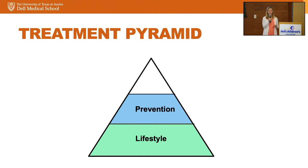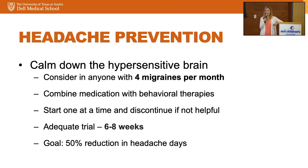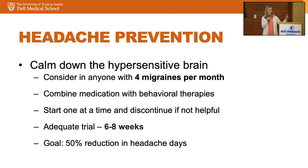When thinking about prevention, the whole goal is to calm down that hypersensitive brain. We should really start thinking about this in anyone having more than four migraine days per month. We know that combining medication therapies with behavioral therapies is the most effective treatment for migraine. My approach is to start one medication at a time — if it's not effective, then we stop it. I've seen patients started on four or five vitamins at once, and they get better, but I have no idea what helped. An adequate trial takes six to eight weeks, and it's important to tell families this.